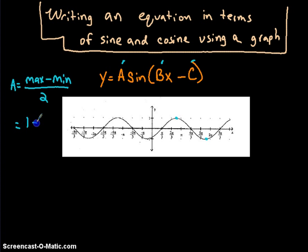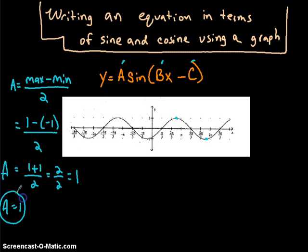So if that's the case, my a value is going to be 1 subtract negative 1 divided by 2. So that's going to be 1 plus 1 over 2, which is 2 over 2, which is 1. So the number a has to be 1.